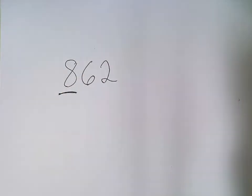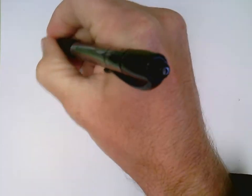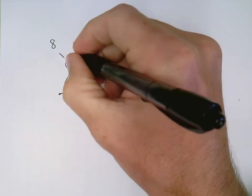I will underline the hundreds place, and that underlined digit will either stay the same as an 8, or it will go up to a 9.